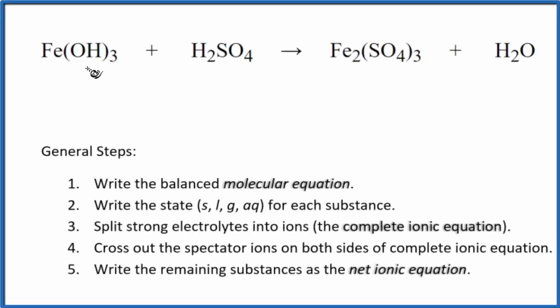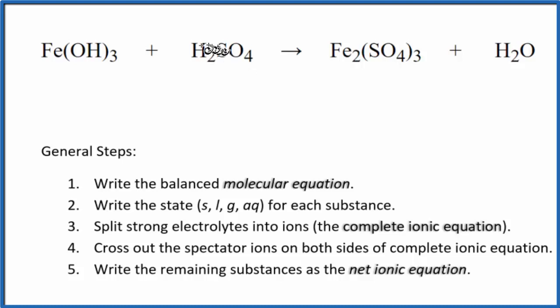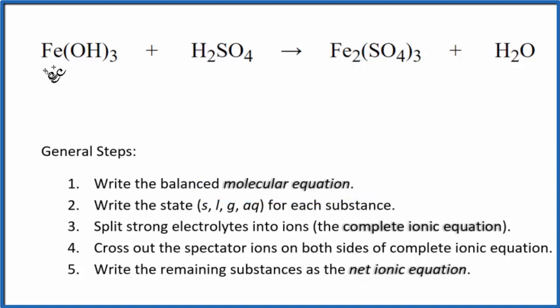In this video, we'll balance the net ionic equation for Fe(OH)₃ plus H₂SO₄. This is iron three hydroxide, and this is sulfuric acid. First thing we need to do is balance the molecular equation.